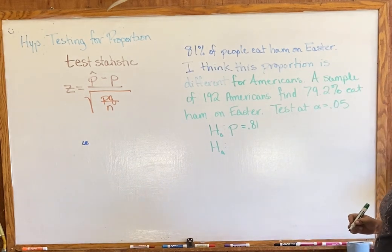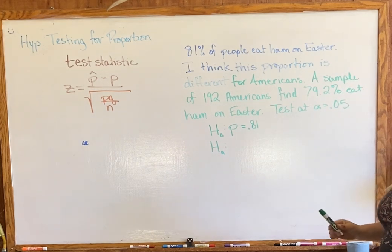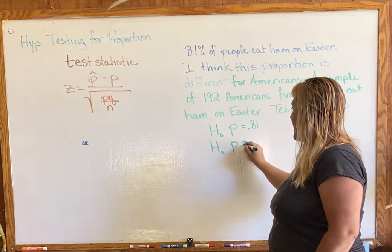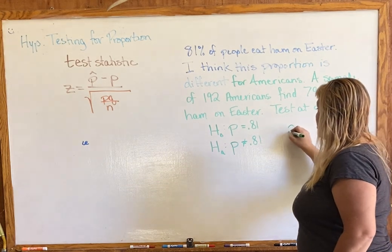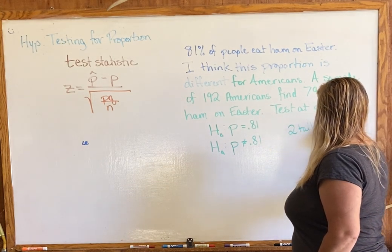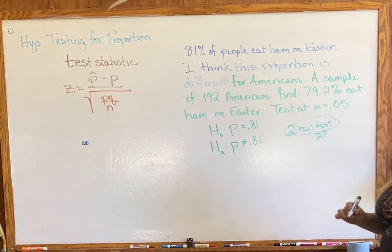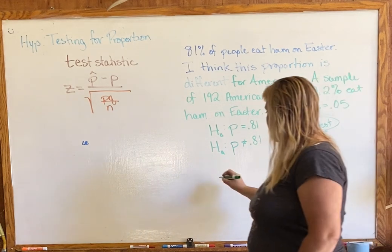Our null is p equals 0.81. Since I think this proportion is different for Americans, our alternate hypothesis uses 'not equal': p ≠ 0.81. That means we have a two-tail test, which means our p-value will need to be doubled at the end.